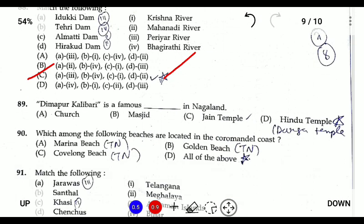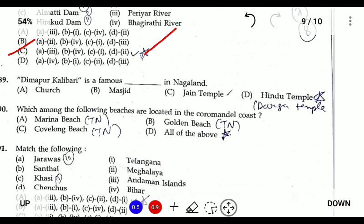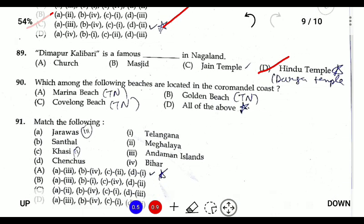Question eighty-nine: the Kamakhya temple is a famous Hindu Durga temple. Question ninety: which of the following are located on the Coromandel Coast? The Coromandel Coast is located near Sri Lanka on the eastern coast of India. All the listed options are located on the Coromandel Coast.